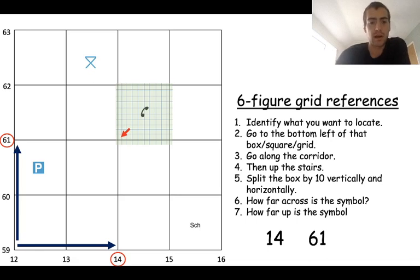Then you need to figure out how far across is the telephone. So you can see the telephone is about one, two, three, four, five across. So we'll put one, four, five. And then how far up is it? One, two, three, four, five again. And that would be our six figure grid reference.